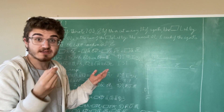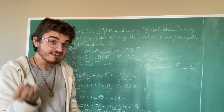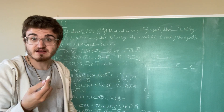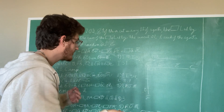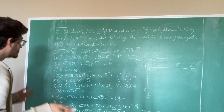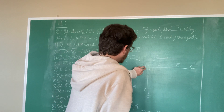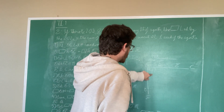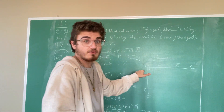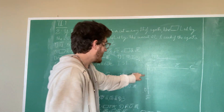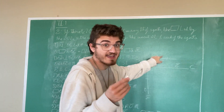We can do this by Proposition I.3: given two unequal straight lines, to cut off from the greater a straight line equal to the lesser. So we have BG perpendicular to BC at point B, and BG equal to A.